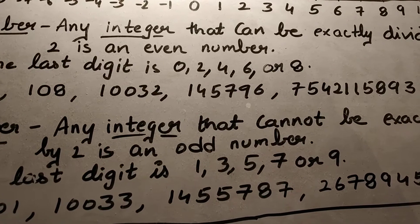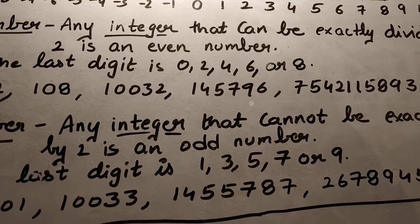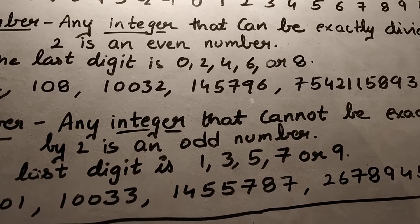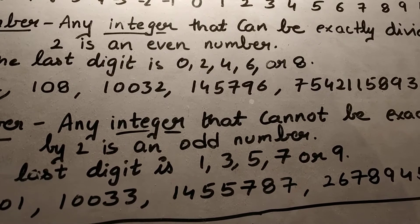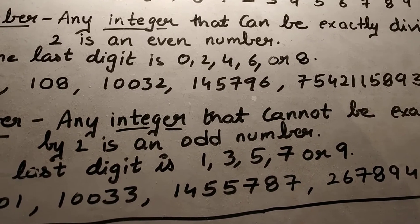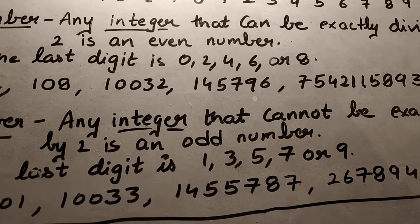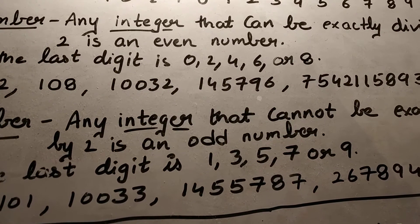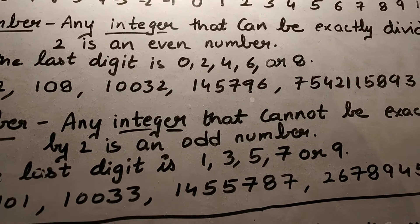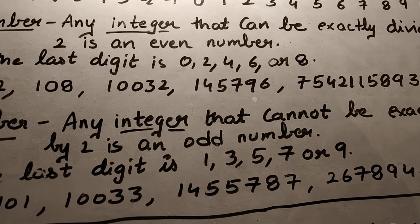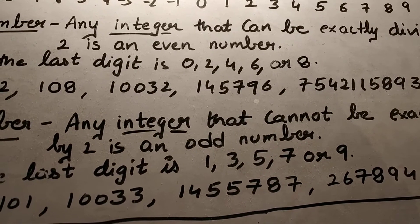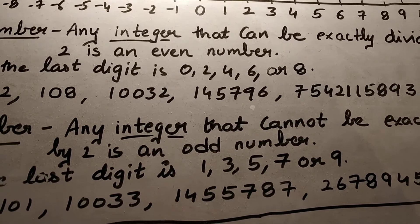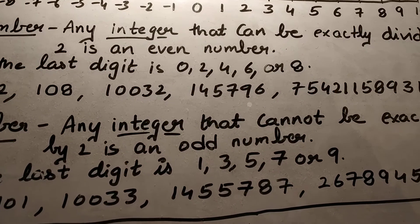In other words, all decimal numbers as well as fraction numbers — fraction numbers meaning those numbers that appear as ratios, like two-fifths or six-tenths — are not integers.